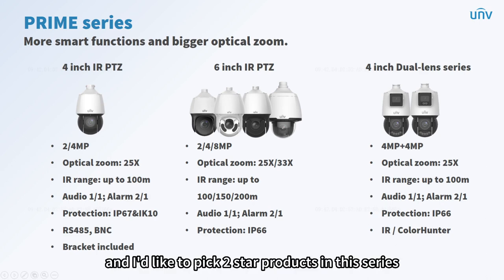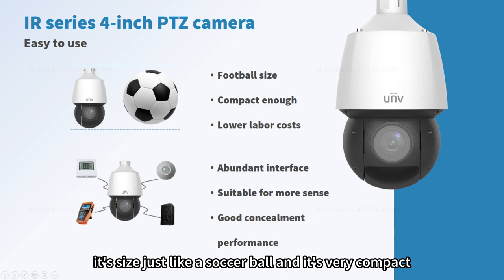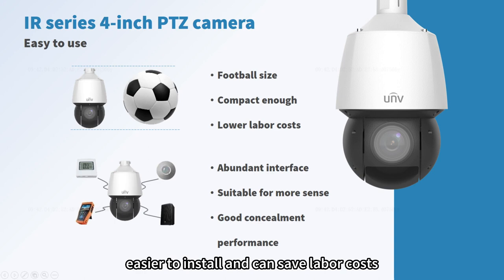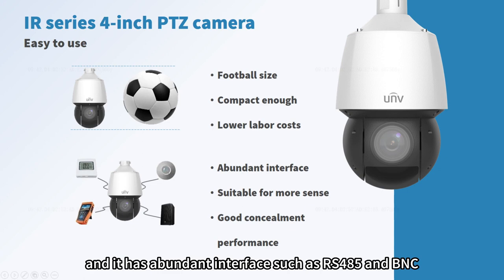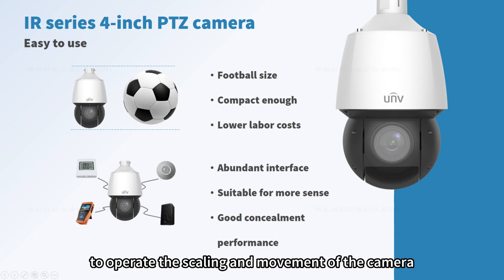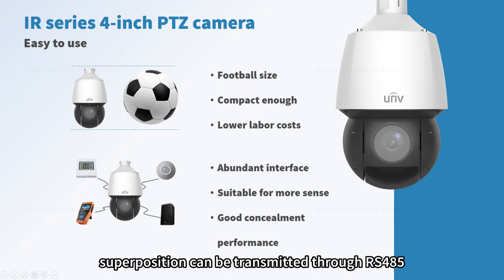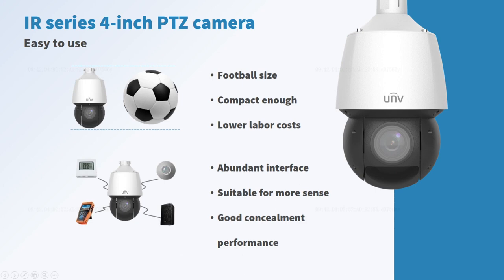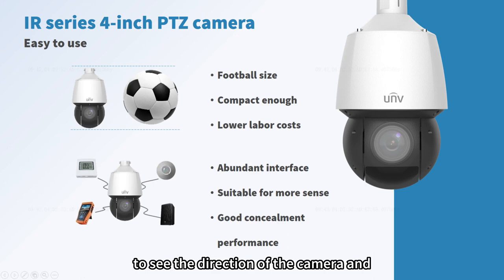One star product of the Prime Series is our 4-inch PTZ camera, sized just like a soccer ball and very compact. Its small size is easier to install and saves labor costs. It supports IP67 and IK10 protection levels with strong environmental adaptability. It has abundant interfaces including RS-485 and BNC. The RS-485 interface can be connected with a keyboard to operate the camera's scaling and movement; zoom, internal temperature, and OSD superposition can be transmitted through RS-485. BNC interface is convenient for installation personnel to use an IPC tester for debugging. An all-black bulb-type design in judicial and public projects gives the camera concealment, preventing suspicious personnel from detecting the camera direction.